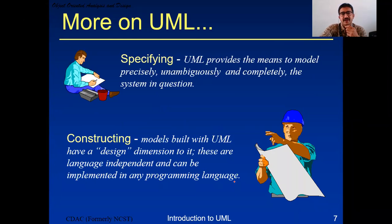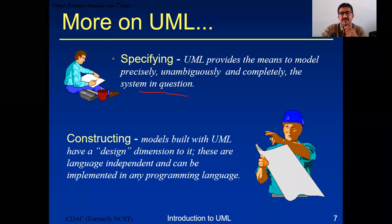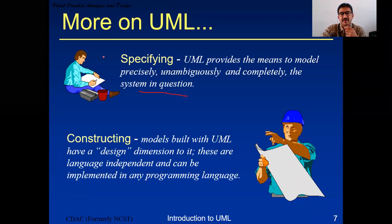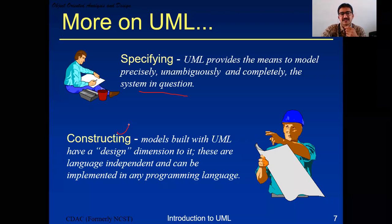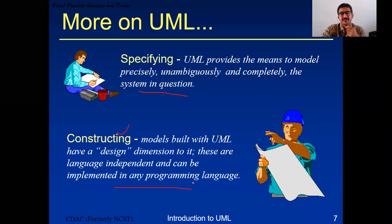Coming to the second part, specifying: UML provides the means to model precisely, unambiguously, and completely the system in question. It specifies neatly for each type of diagram - if you want a class diagram, use case diagram, sequence diagram, activity diagram, deployment - whatever is specified with its specific meaning without any ambiguity, unambiguously, and completely gives a solution for a problem. Constructing: models built with UML have design dimensions and are language independent, can be implemented in any programming language - maybe Python, Java, whichever is comfortable.